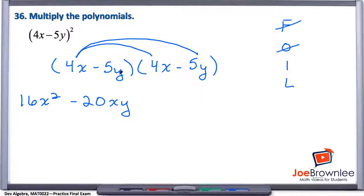Do our I, our inners, so negative 5y times positive 4x. Well, again, that gives us minus 20xy.